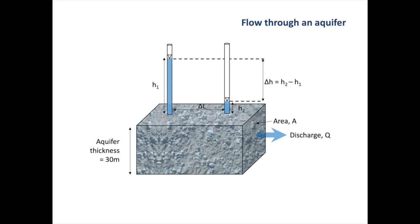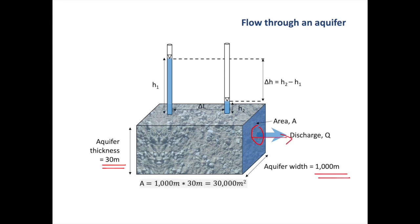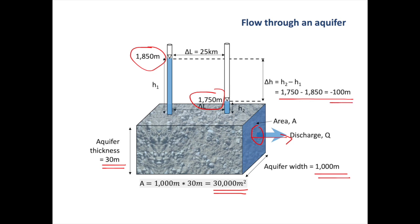Let's illustrate this with a real example. We have an aquifer with a thickness of 30 meters and a width of 1,000 meters. The area through which the groundwater has to flow is 1,000 meters times 30 meters, which equals 30,000 square meters — that is the cross-sectional area perpendicular to groundwater discharge. We have two boreholes: one has a water level elevation of 1,850 meters and one has an elevation of 1,750 meters, which means we have a delta H of minus 100 meters.